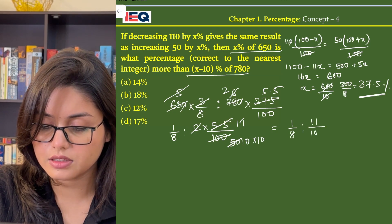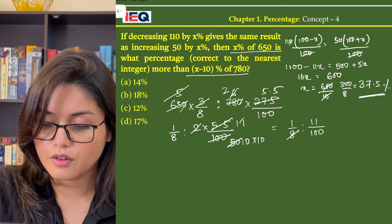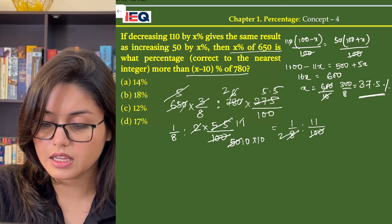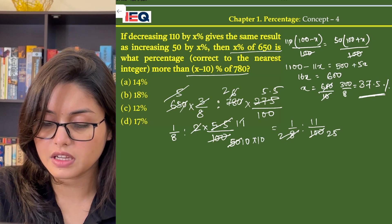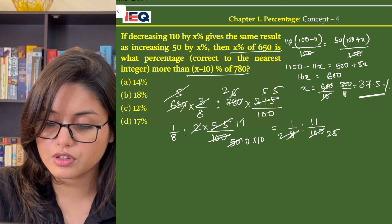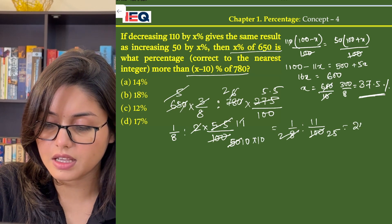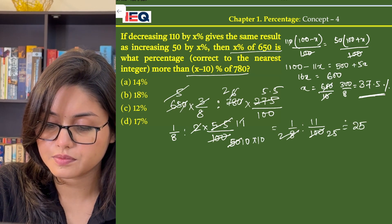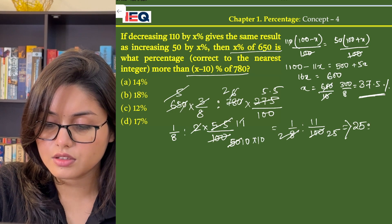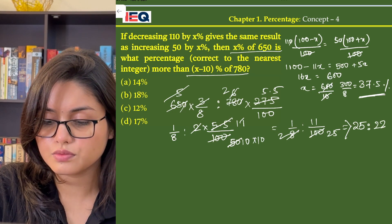That is 11/100; 4 twos are 8, 4 twenty-fives are. So the ratio we get is 25 : 22.